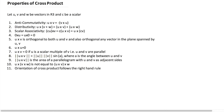Before moving on, I wanted to cover some of the properties of vector cross products. I will not be proving all of these properties, but I would urge you to practice with a few examples and convince yourself that the following properties are indeed true. The first one is anti-commutativity: the cross product of u and v is the negative of the cross product of v and u.